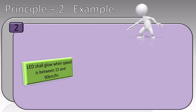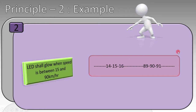Let's use an example to understand the second principle. Suppose this is the customer's requirement: the LED shall glow when speed is between 15 and 90 km per hour. One way of testing this requirement is to do a boundary value analysis. For this test, we have taken 6 values.